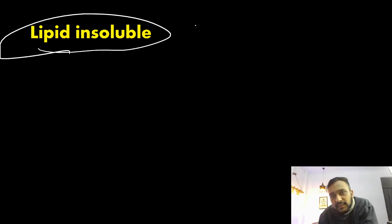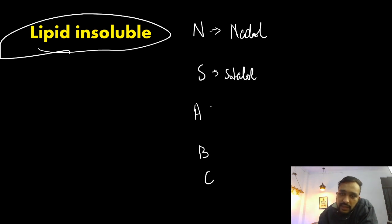Now coming to the last mnemonic. Beta blockers which are lipid insoluble. The mnemonic is: not soluble A, B, C. Where N stands for nadolol, S for sotalol. These are mainly excreted in kidney, so they are unsafe in renal failure.